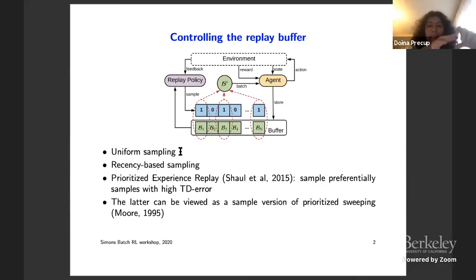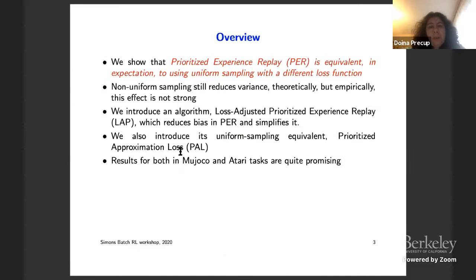So this idea can be viewed actually as a sample-based version of prioritized sweeping, which was an algorithm introduced by Andrew Moore back in the mid-90s in the context of dynamic programming algorithms. The idea there was to prioritize updating certain states where their next state had received a big update. And so here we can think of this as the same idea, but we would like to do this in a sample-based way. Now, using prioritized experience replay is very popular, has empirically proven to be much more successful than uniform sampling. However, it is somewhat more cumbersome to implement because now we need to have a priority queue for the examples and they have to be resorted in this priority queue. And also, of course, the TD error can be kind of noisy. And so that may lead to some amount of variance in the updates as well.